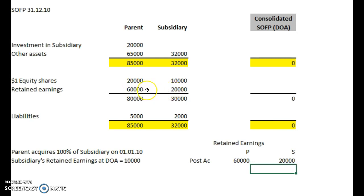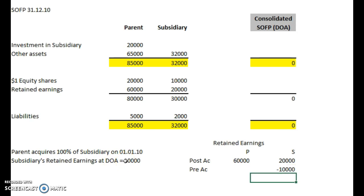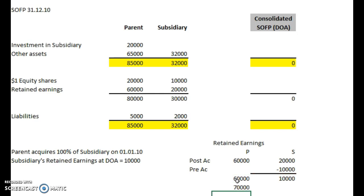Remember this balance sheet is at one year after the date of acquisition, so this is post-acquisition earnings. We need to just remove the pre-acquisition amount. The figure is given in the question: the subsidiary's retained earnings at the date of acquisition — i.e. pre-acquisition — is 10,000. So we reduce that figure by 10,000, which gives us 10,000. Bringing this figure down gives us a total for post-acquisition earnings of 60 plus 10, which is 70,000 post-acquisition earnings.